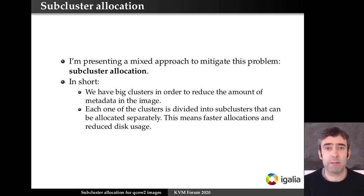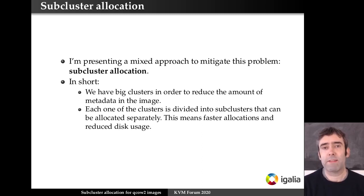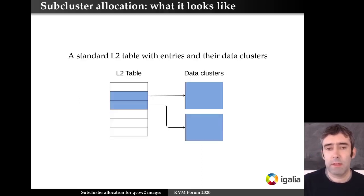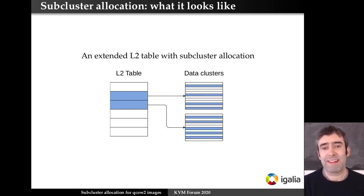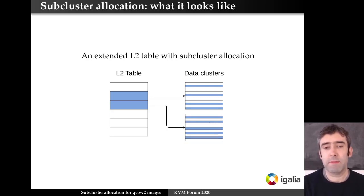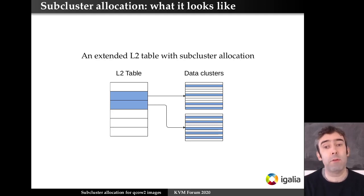The basic idea is that we have big clusters in order to reduce the amount of metadata, but each one of them is divided into sub-clusters that can be allocated separately. So we have faster allocations and less disk usage. Graphically, a normal L2 table has two data clusters. With sub-clusters, each one of the data clusters is divided into 32 sub-clusters of the same size, and they are allocated separately. Only the areas in blue are actually allocated and using disk space.